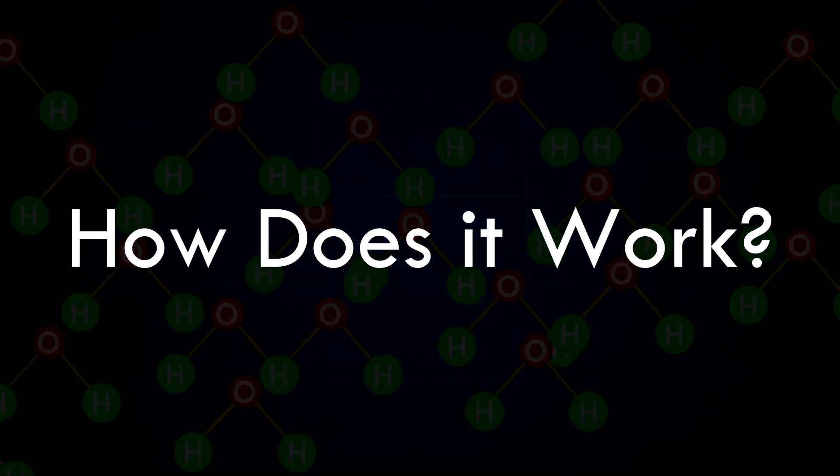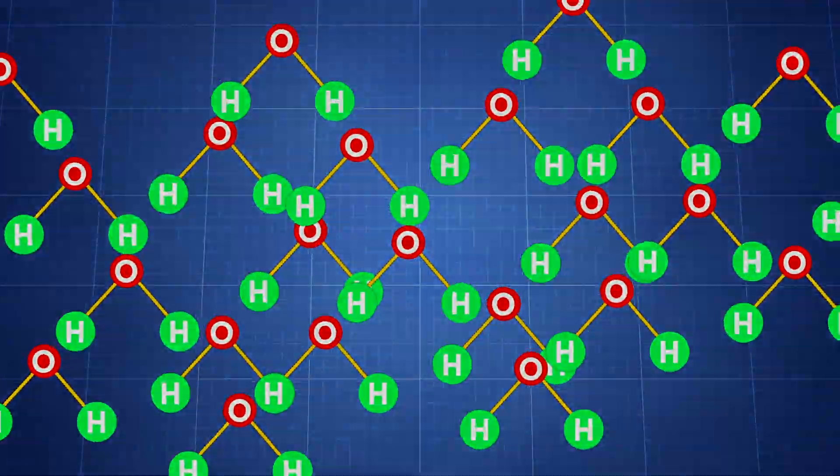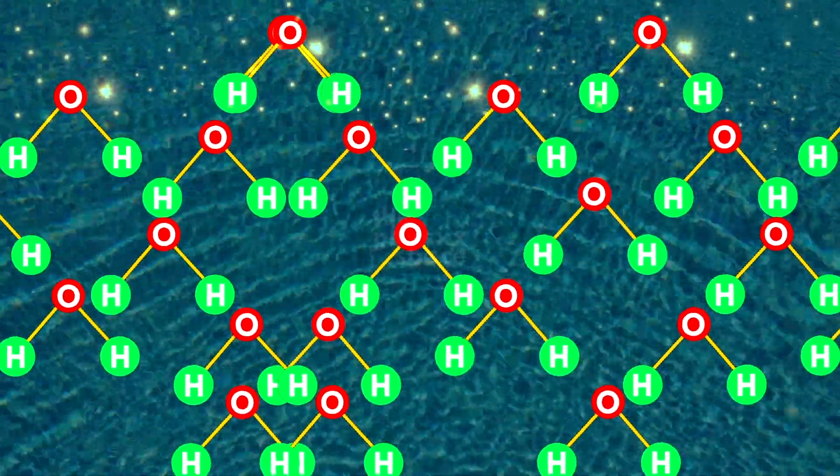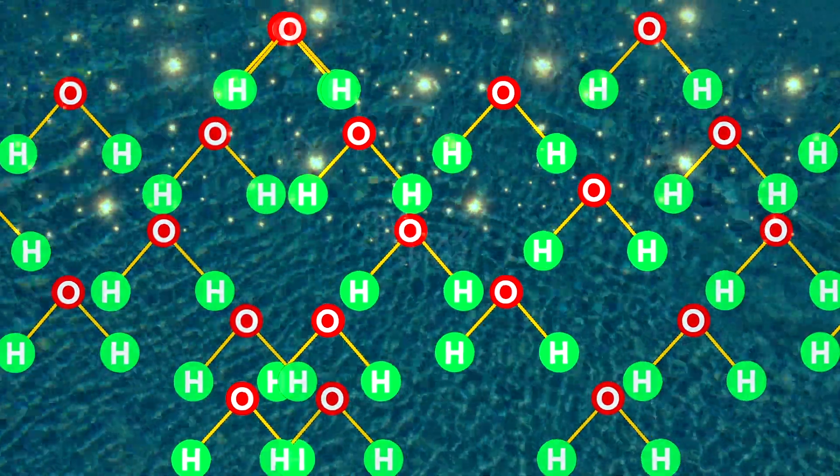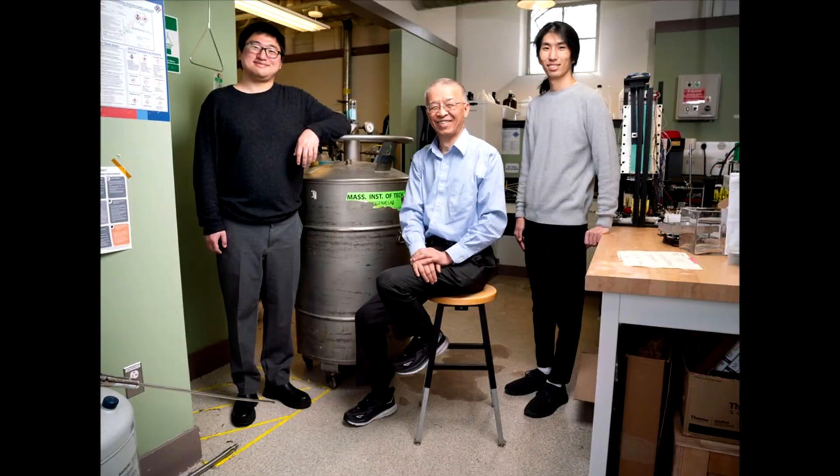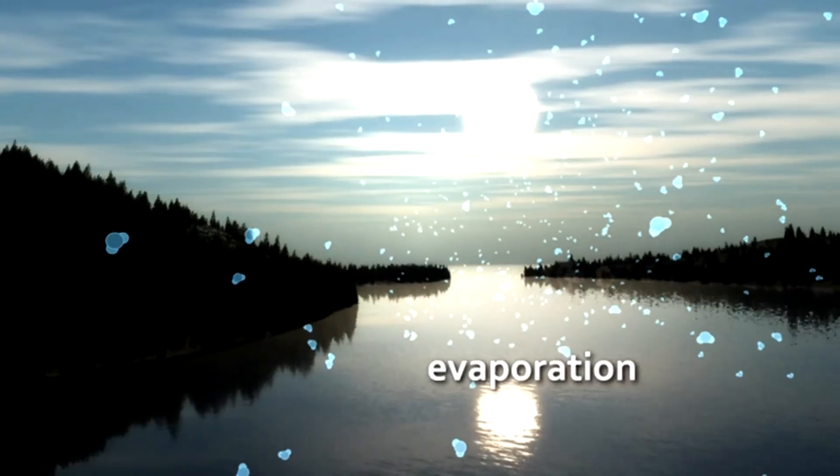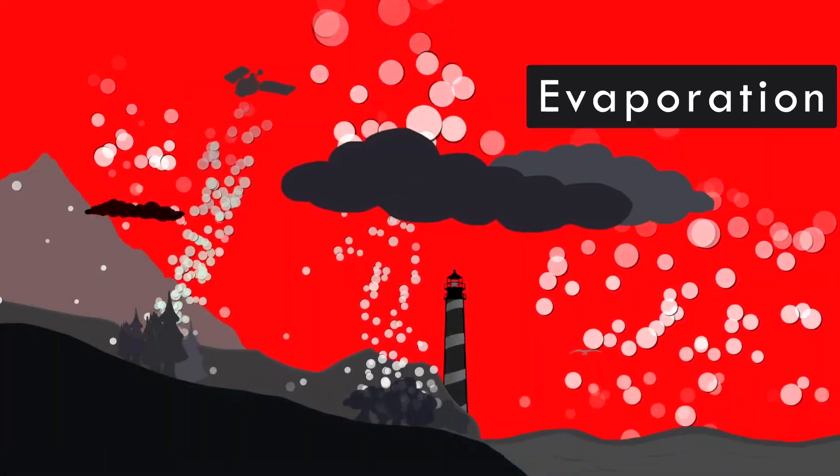Now let's see how the photomolecular effect works. The discovery that light can directly vaporize water without the need for heat is a remarkable finding that challenges our conventional understanding of evaporation. This phenomenon, dubbed the photomolecular effect by the MIT researchers, has significant implications for fields ranging from climate science to industrial processes.